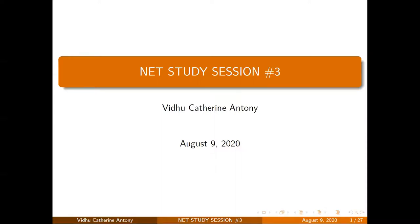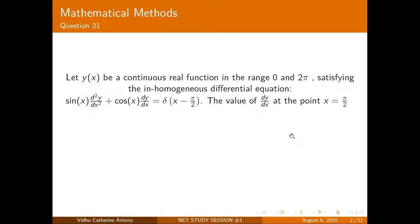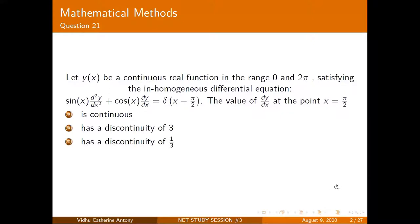Let's start with the first question. This involves a property of the Dirac delta function. Let y(x) be a continuous real function in the range 0 to 2π satisfying the inhomogeneous differential equation: sin(x) d²y/dx² + cos(x) dy/dx = δ(x − π/2). The question asks about the value of dy/dx at x = π/2: is it continuous, has a discontinuity of 3, of 1/3, or of 1?